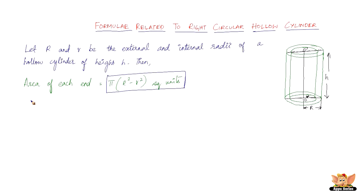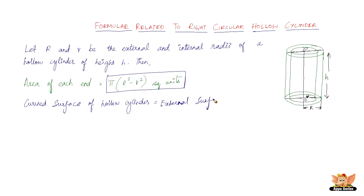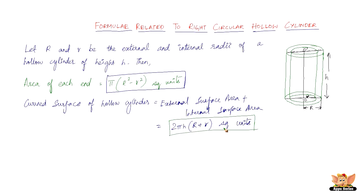The next one is going to be the curved surface area of the hollow cylinder. There is a huge difference between the curved surface area of just a cylinder and that of a hollow cylinder, because the hollow cylinder has got the curved surface in two places — one is the outside and one is the internal. So that will be the sum of external surface area plus the internal surface area, which is 2πh times (capital R plus small r) square units. This is the curved surface area of a hollow cylinder.